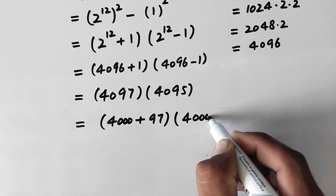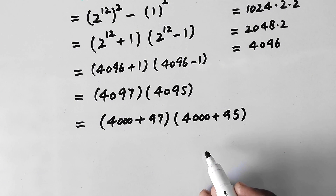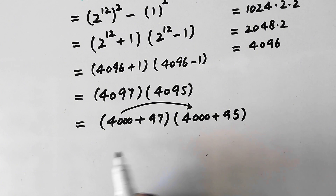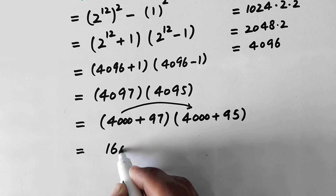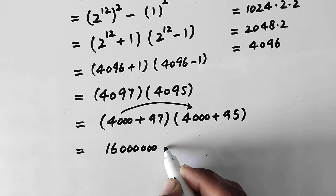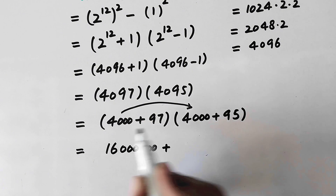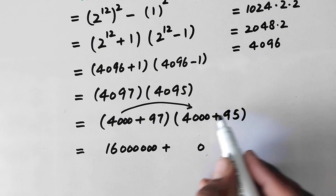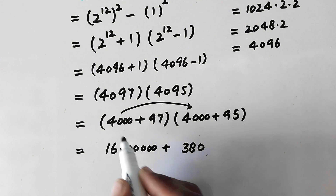We write 4097 as 4000 plus 97, and 4095 as 4000 plus 95. Now we multiply them. First, 4000 times 4000: 4 times 4 is 16, and adding the six zeros gives 16,000,000. Then 4000 times 95: 4 times 5 is 20, carry 2; 4 times 9 is 36 plus 2 equals 38, giving 380,000.